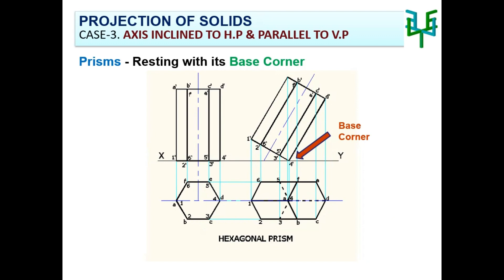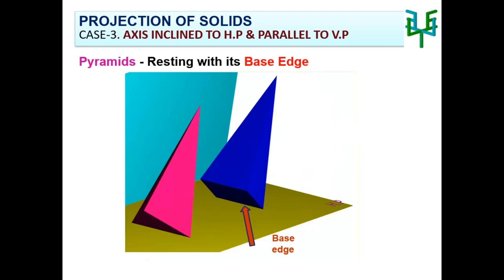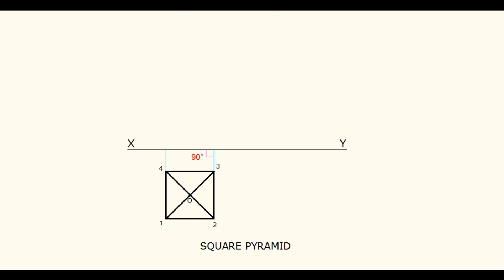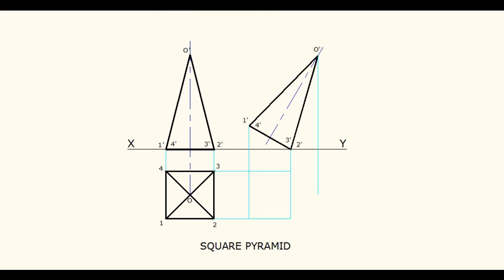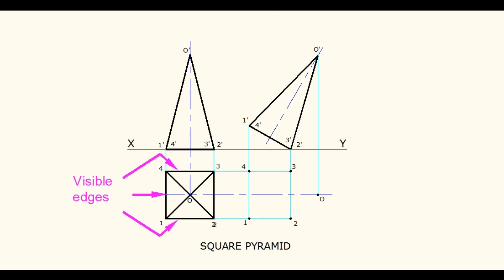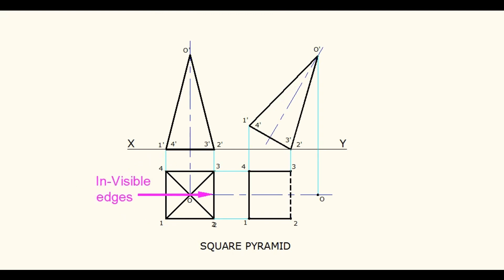We will now go into detail about pyramids resting with the base edge on HP. In the first stage, draw the plan by having one edge perpendicular to VP, since the pyramid is resting with its base edge. Then project it above the X-Y line to draw the elevation. When the pyramid's axis is inclined to HP, it is easier to take the inclination on the base — if the axis is theta degrees inclined, the base inclination is 90 minus theta degrees. Redraw the second stage elevation, project all points below the X-Y line, and project the apex point also. Identify corresponding intersection points, name them, darken the visible edges, and draw slant edges by joining the base corners to the apex point.